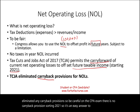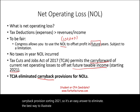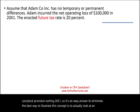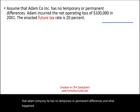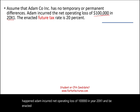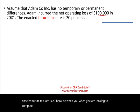The best way to illustrate this concept is to look at an example. Assume that Adam Company has no temporary or permanent differences. Adam incurred a net operating loss of $100,000 in year 20X1, and the enacted future tax rate is 20%. When you are looking to compute the future savings from the $100,000 loss, you have to use the future tax rate.